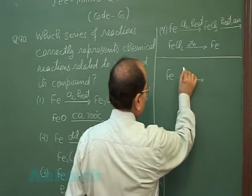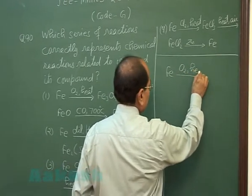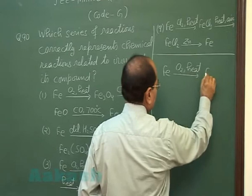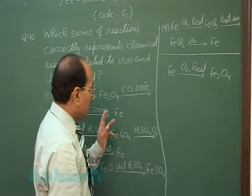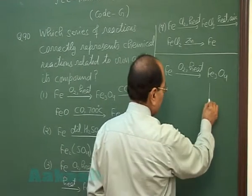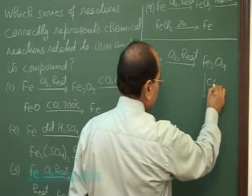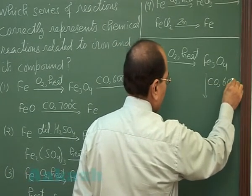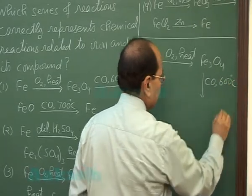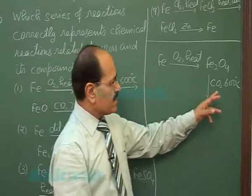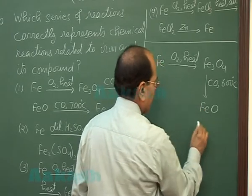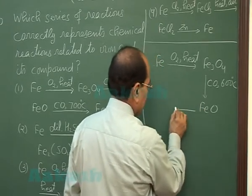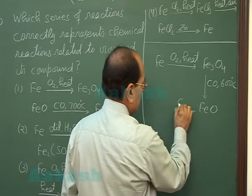Iron when heated in presence of oxygen gets converted into Fe3O4. Fe3O4 when reduced in presence of carbon monoxide at 600 degrees Celsius gives ferrous oxide. Ferrous oxide is further reduced by carbon monoxide at 700 degrees Celsius to iron.